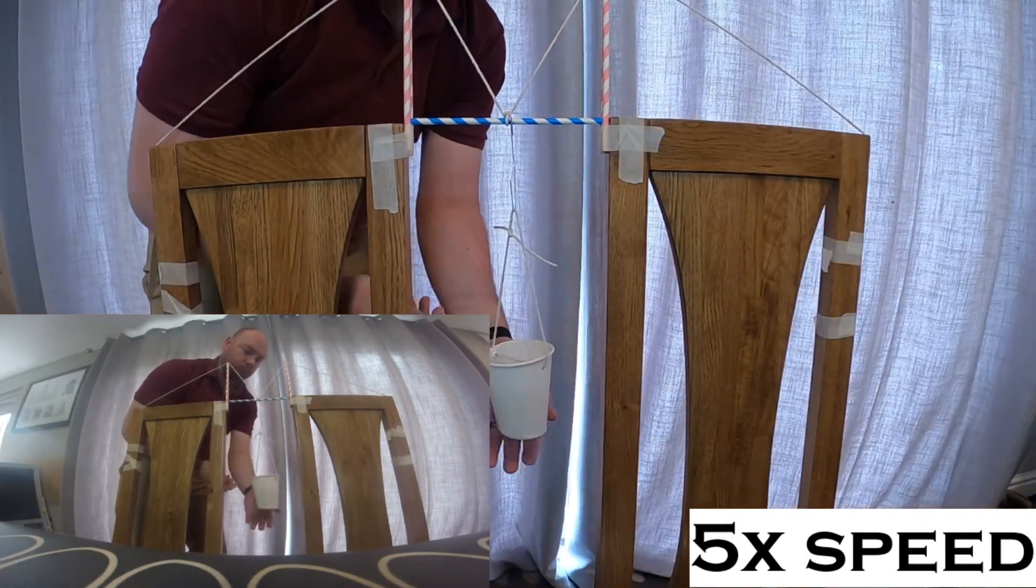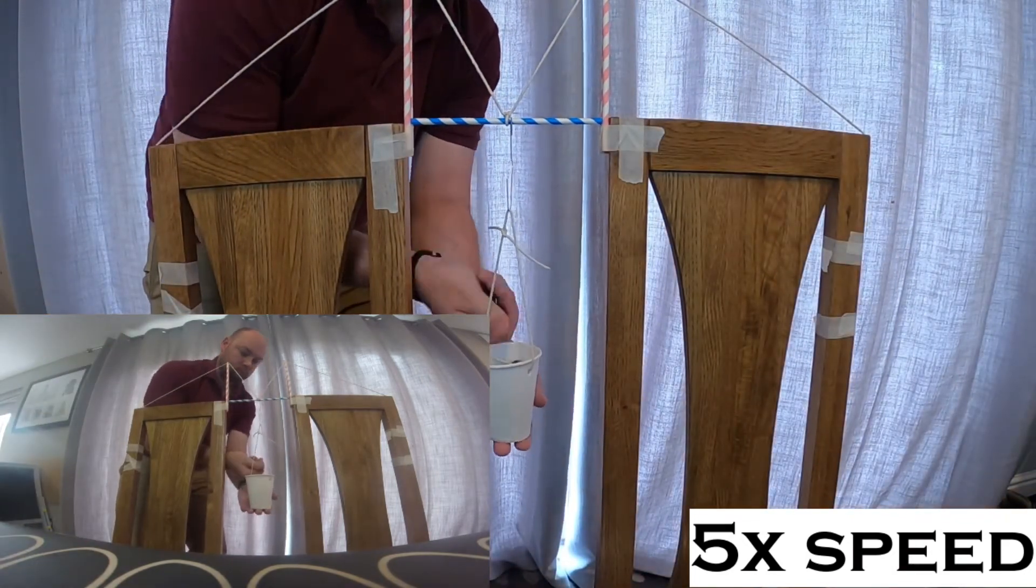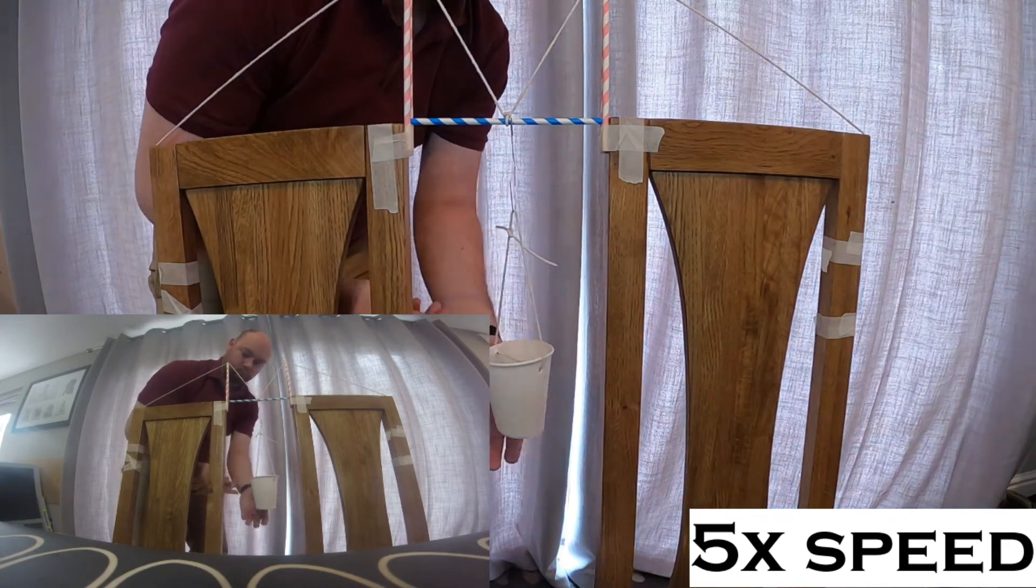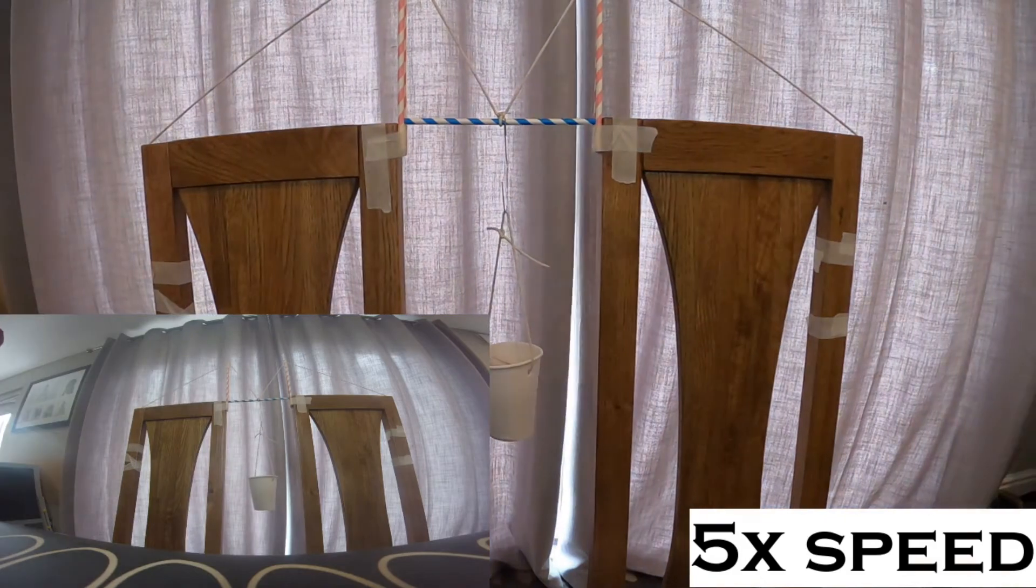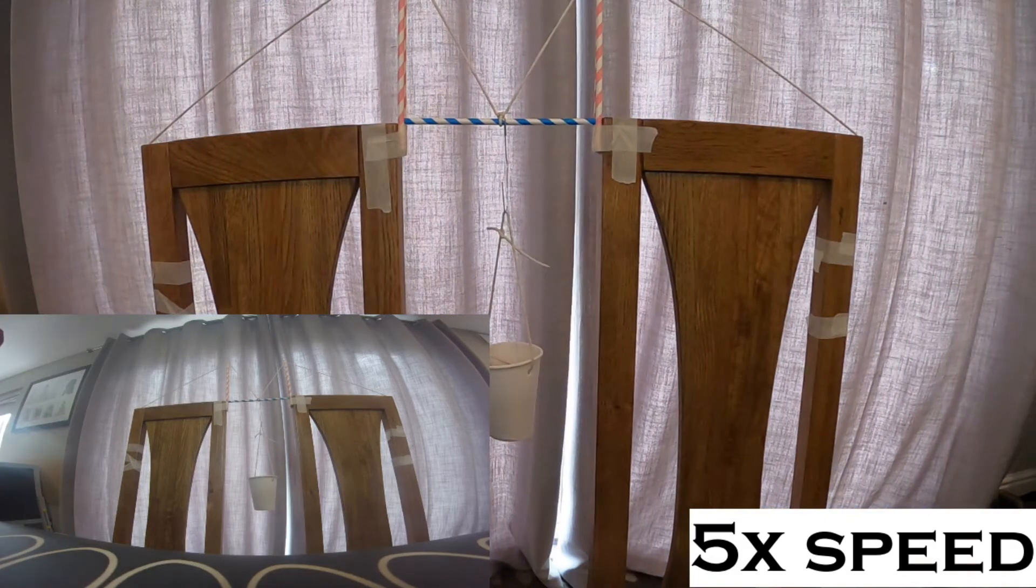You'll notice that the suspension bridge is doing much better at holding the weight than the beam bridge did, and eventually I actually ran out of one-pence coins to put in it, and the bridge was still standing and hadn't bent at all in the middle. So what was actually happening in this demonstration that makes suspension bridges better than beam bridges for supporting the weight?